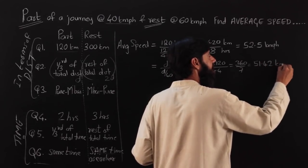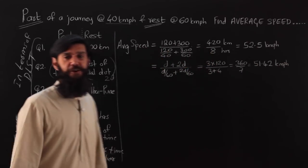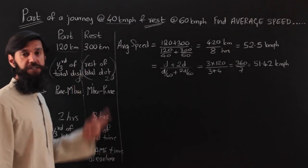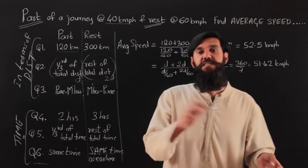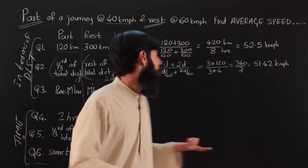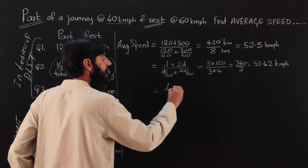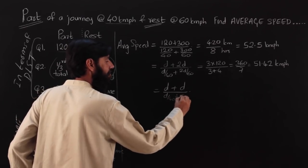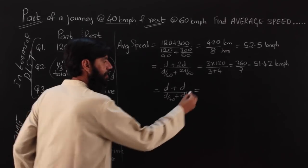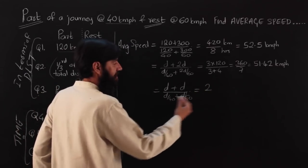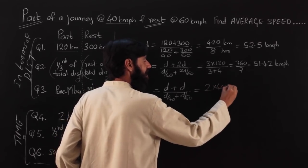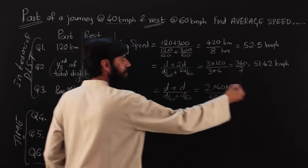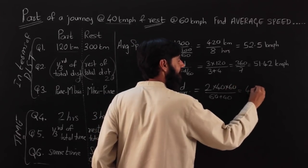Question 3 — Pune to Mumbai and back — we just saw in Question 2 that we don't need the exact distance, only the ratio. Here the ratio is 1:1, so assume both stretches are d. Time going = d / 40, time returning = d / 60. Multiplying by 40 × 60 = 2400 in numerator and denominator: average speed = 2 × 40 × 60 / (60 + 40) = 4800 / 100 = 48 kilometers per hour.